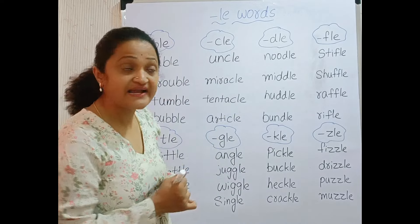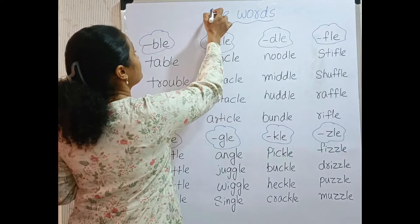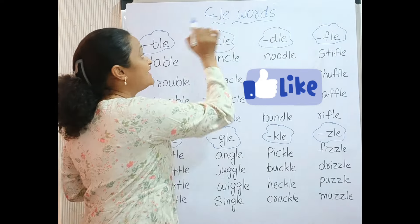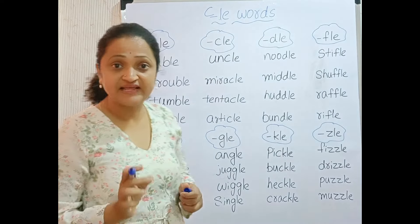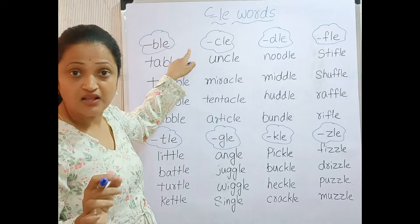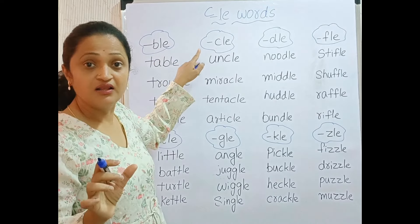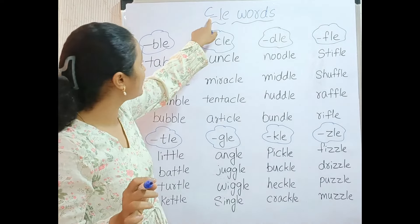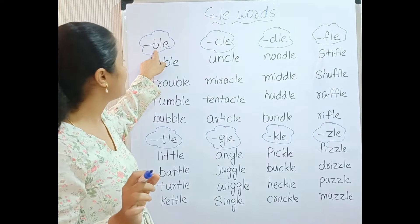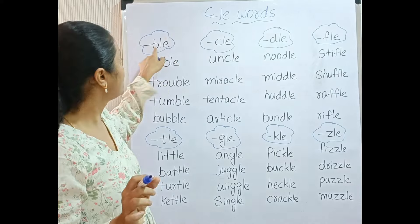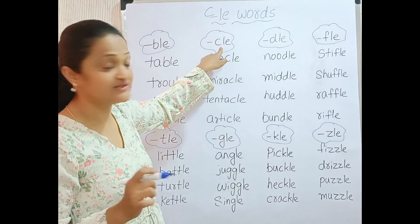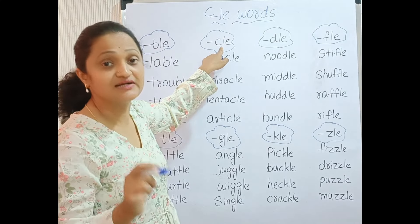If the word ends with a consonant and LE, then the sound is L. If the consonant is B, then the sound is BLE. If the consonant is C, the sound is CLE.